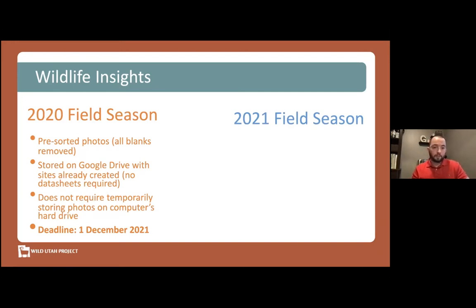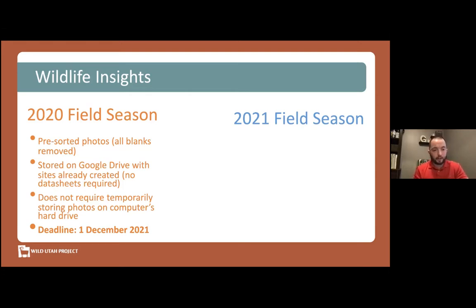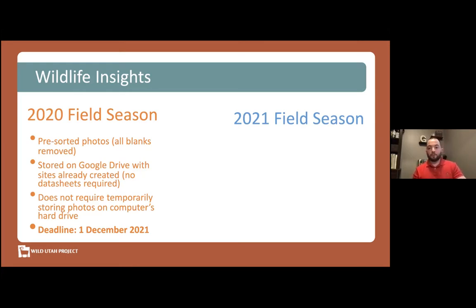Many of you were awesome enough to sort your 2020 photos already — thank you, that's going to make uploading a breeze. All the 2020 photos are stored on a Google Drive folder, and all sites are already created within Wildlife Insights, so there are no extra data sheets to worry about. You just download the photos and upload them to the program, and this does not require you to permanently store photos on your hard drive — you can delete them immediately after upload. That's not the case for the 2021 photos, which I'll get into in just a moment.